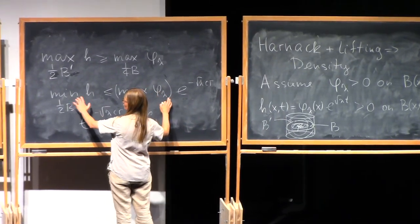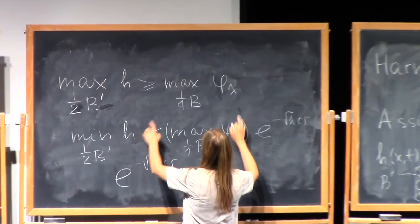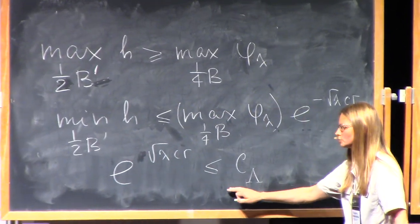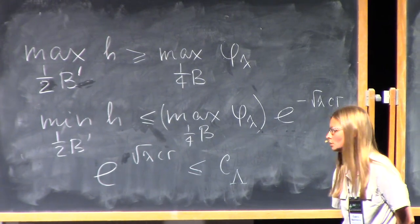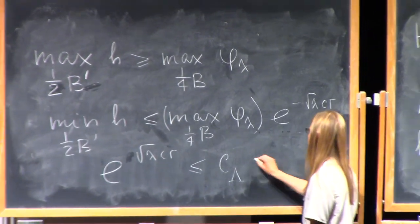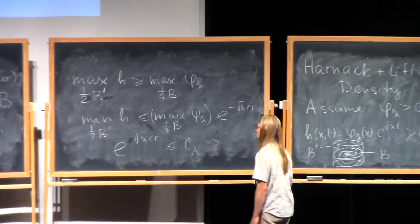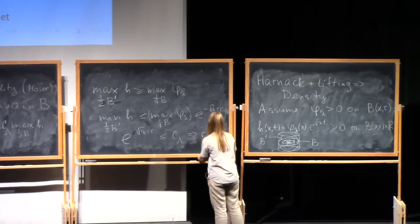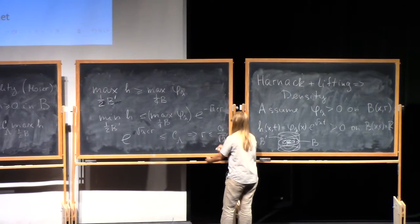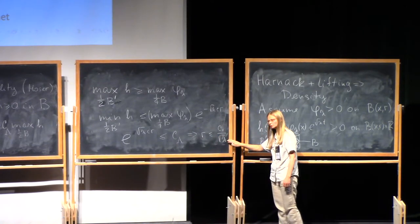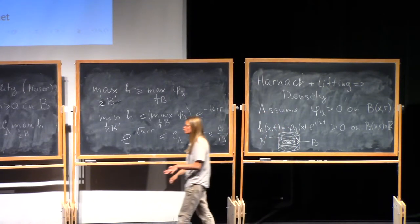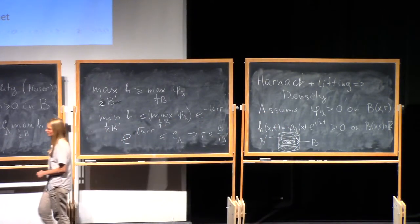So we know that e to minus square root of lambda cr is bounded by c lambda. Let me see. So this was the minimum, this was the maximum, so this ratio is bounded by the constant. And it tells you that the exponent is bounded, or r is bounded by a constant over the square root of lambda. So the zero set is one over square root of lambda dense there.